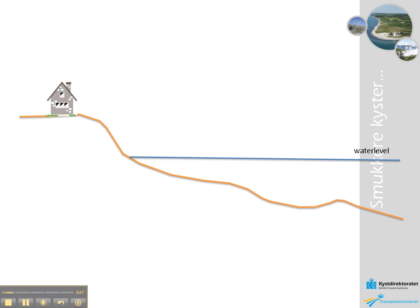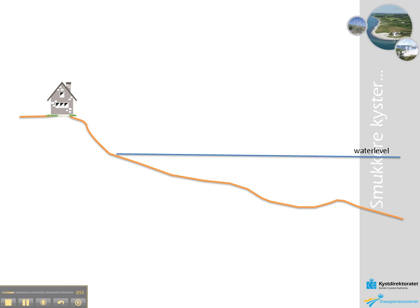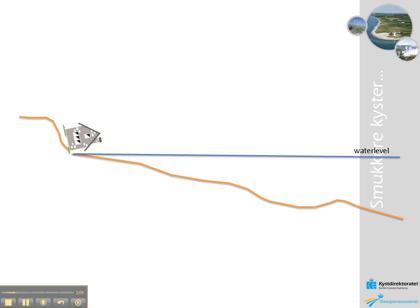When the water continues to rise and reaches the front of the dune, erosion takes place. The erosion can be so severe that the protecting dune under the house foundation disappears, and the house will eventually fall down onto the beach.